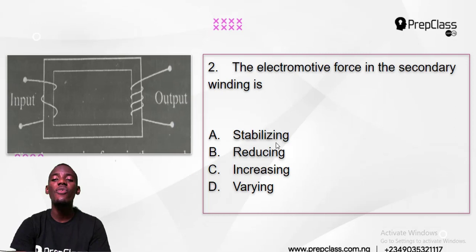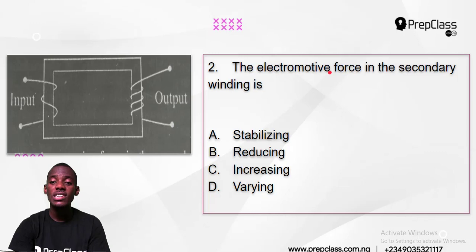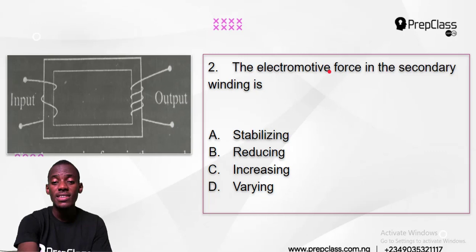Now number 2: the electromotive force in the secondary winding — is it stabilizing, reducing, increasing, or varying? We have primary winding and secondary winding — this is a transformer. It has two windings: primary and secondary. The EMF in the secondary winding — is it stabilizing, reducing, increasing, or varying? Do you have any idea?